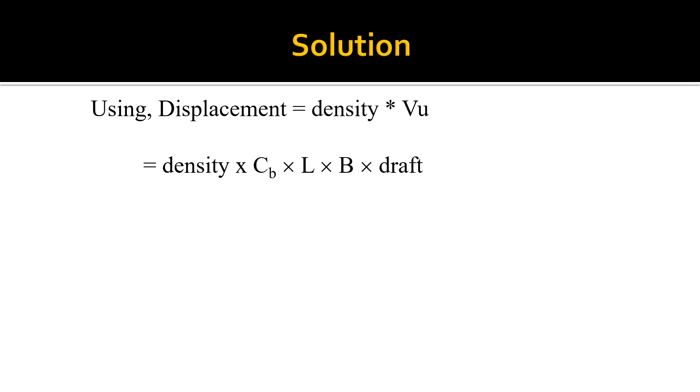Expounding density times CB times L times B times draft. Substituting the values where density is 1.025 times 0.74 for CB times 138 for the length times 25 for the breadth and times 6.45 for the draft. We will have the density 1.025 times 16,466.85 cubic meters, the VU.